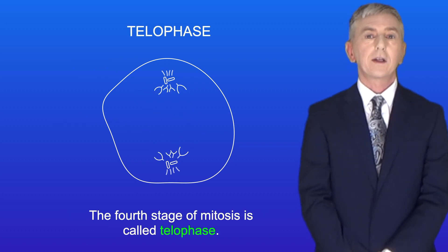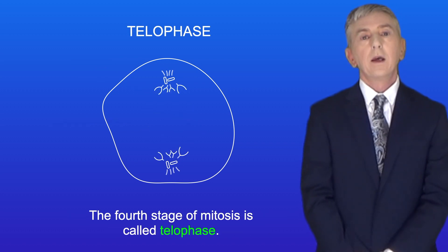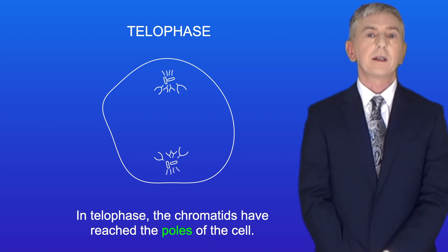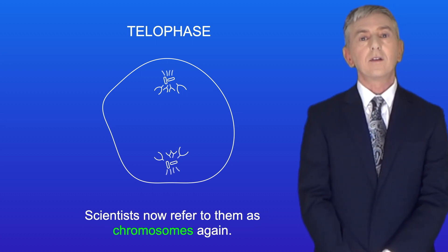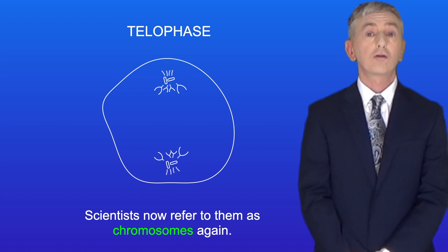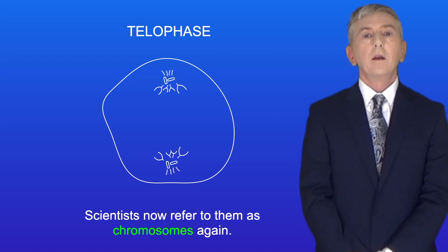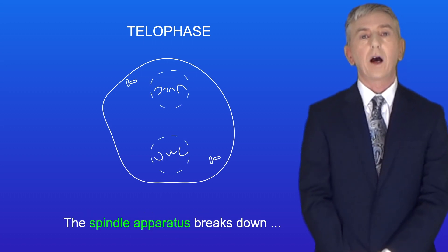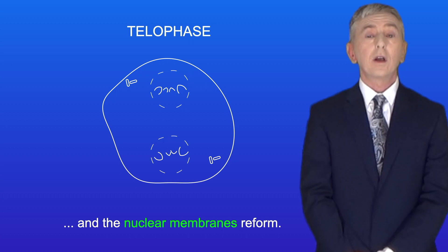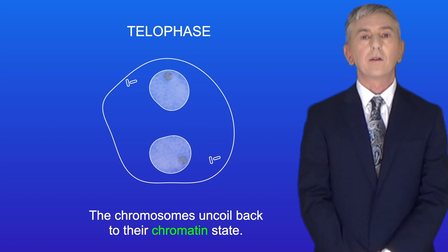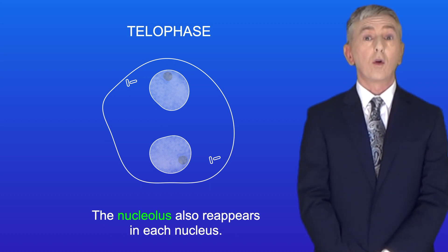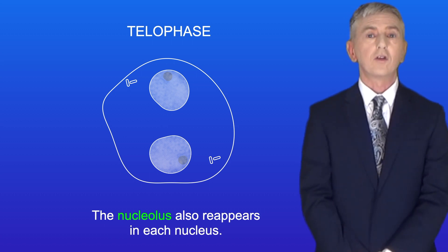The fourth stage of mitosis is called telophase. In telophase the chromatids have reached the poles of the cell, and scientists now refer to them as chromosomes again. The spindle apparatus breaks down, and the nuclear membranes reform. The chromosomes uncoil back to their chromatin state, and the nucleolus also reappears in each nucleus.